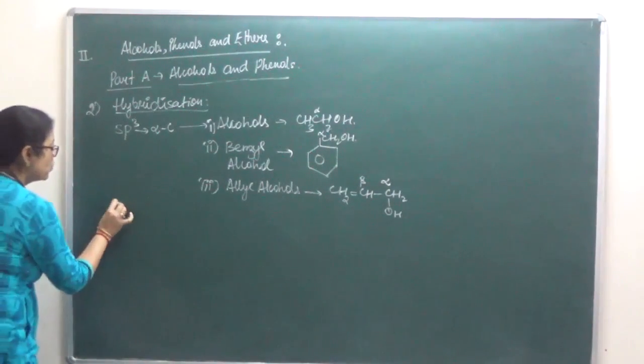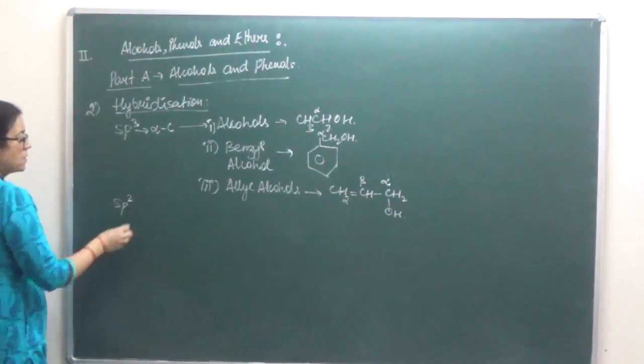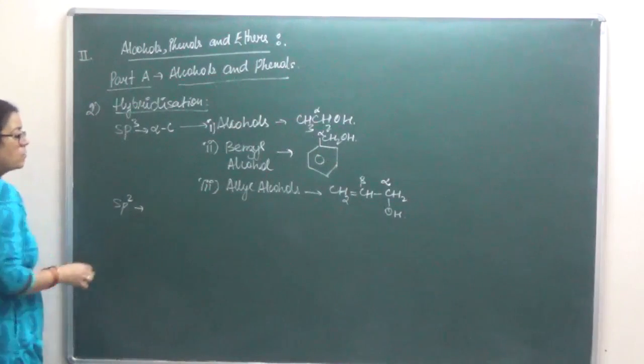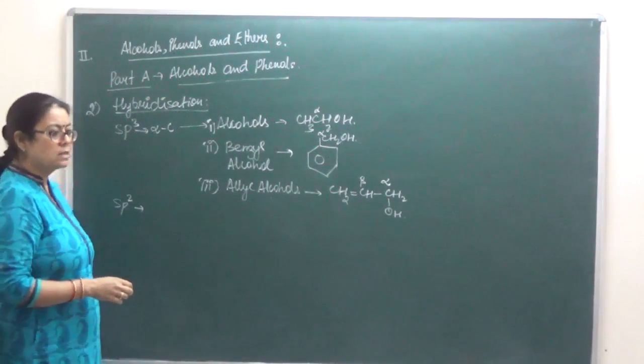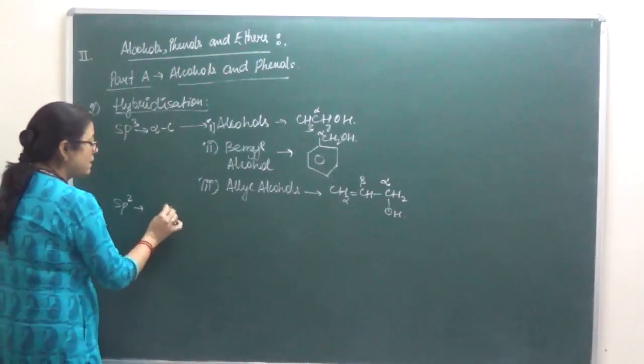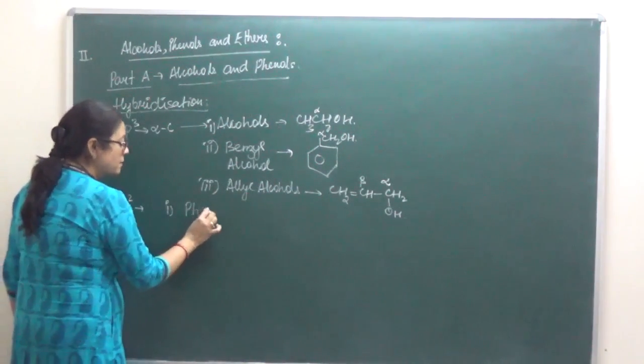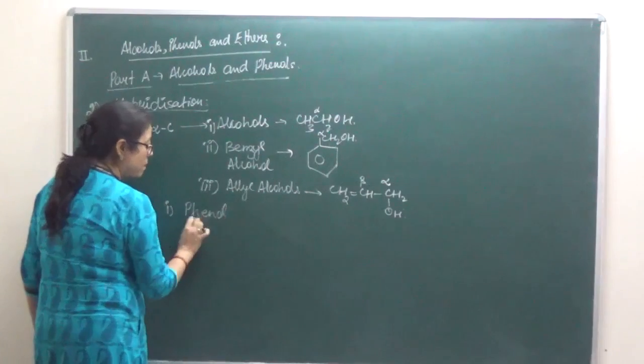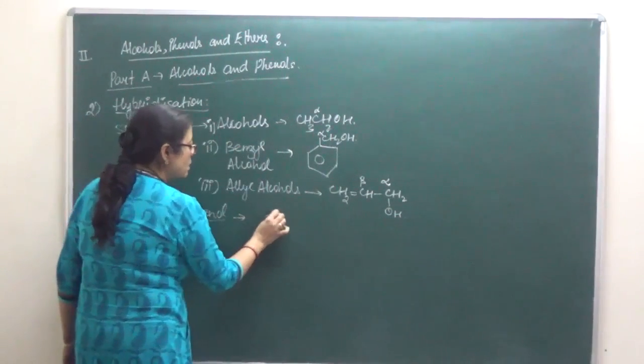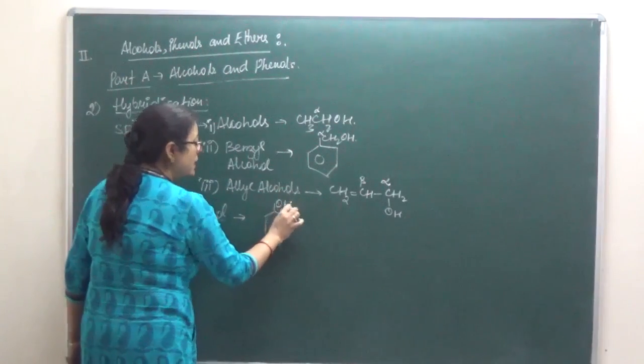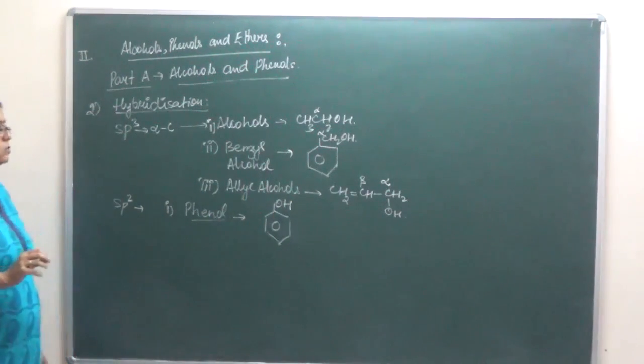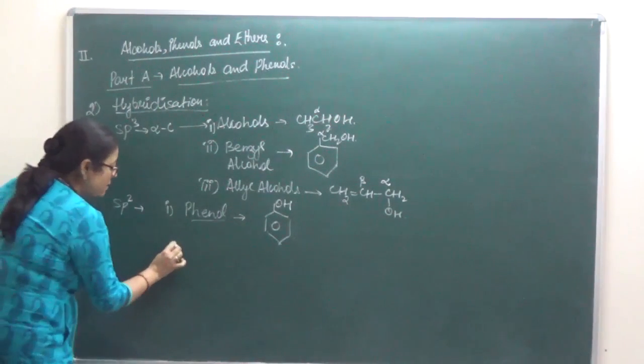Second, SP2 hybridization. Now the alpha carbon atom is going to be SP2 hybridized. First, phenol. Phenol has an OH group attached to the benzene ring. Or second.